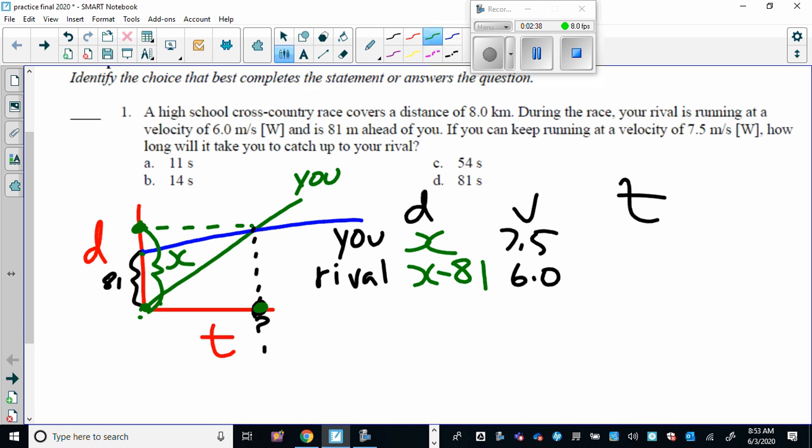Now what about the time? Well, again, we have no idea what this number is here, but we can write a relationship between velocity and distance because we know that velocity equals distance over time, and therefore time equals distance over velocity. And we can write an expression for that for each of you. So your time is going to be x over 7.5, and your rival's time is going to be x minus 81 over 6, and since you must meet at the same time, then those times must be equal to one another.